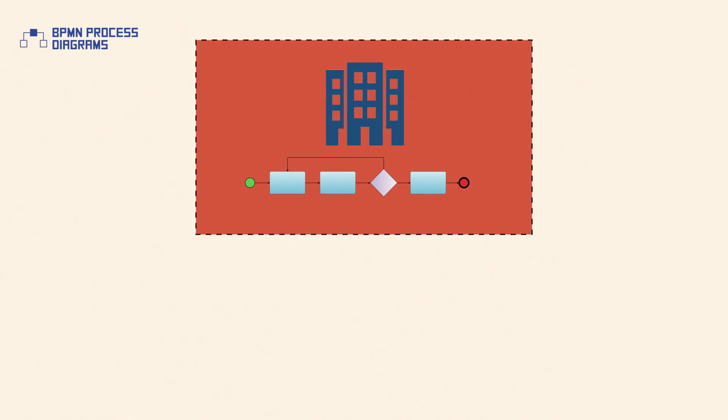There are two types of private processes: executable and non-executable. An executable process is a process that has been modeled for the purpose of being partially or completely executed according to BPMN semantics.